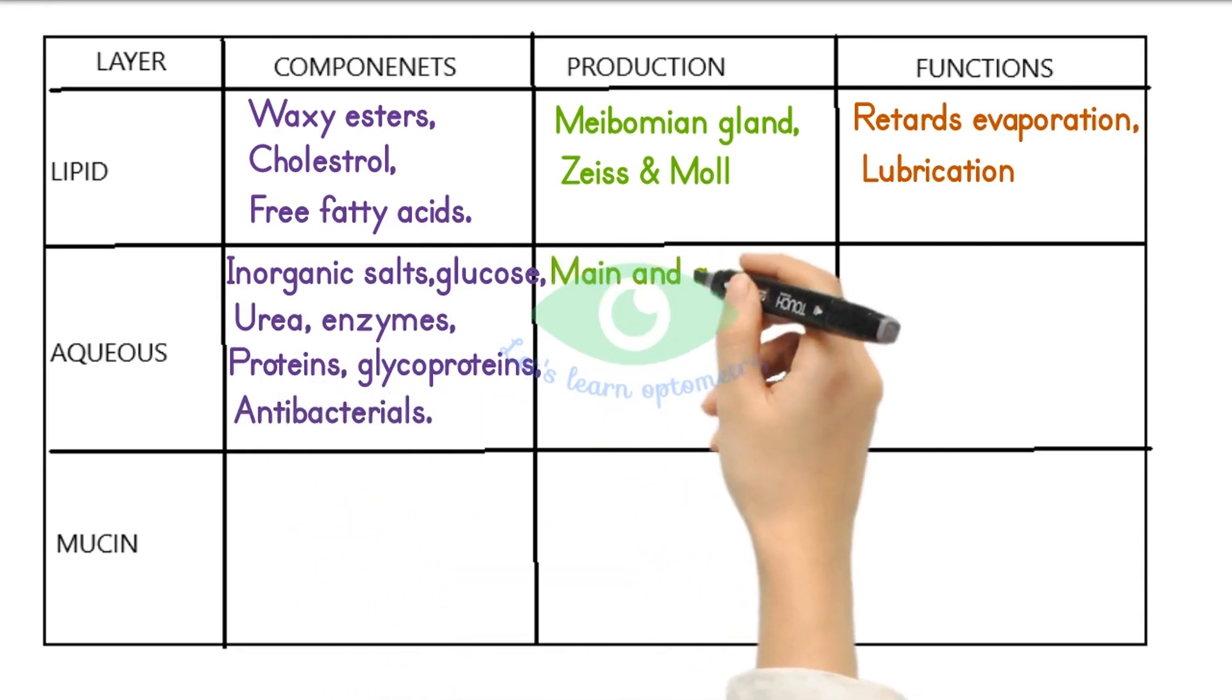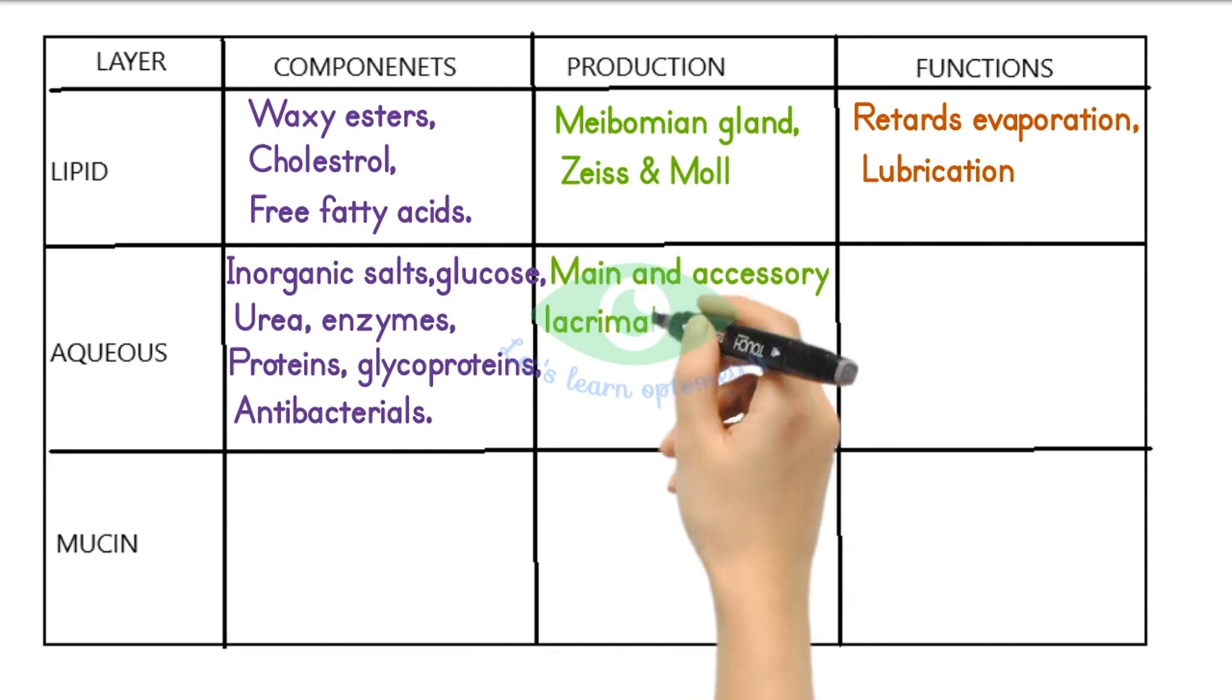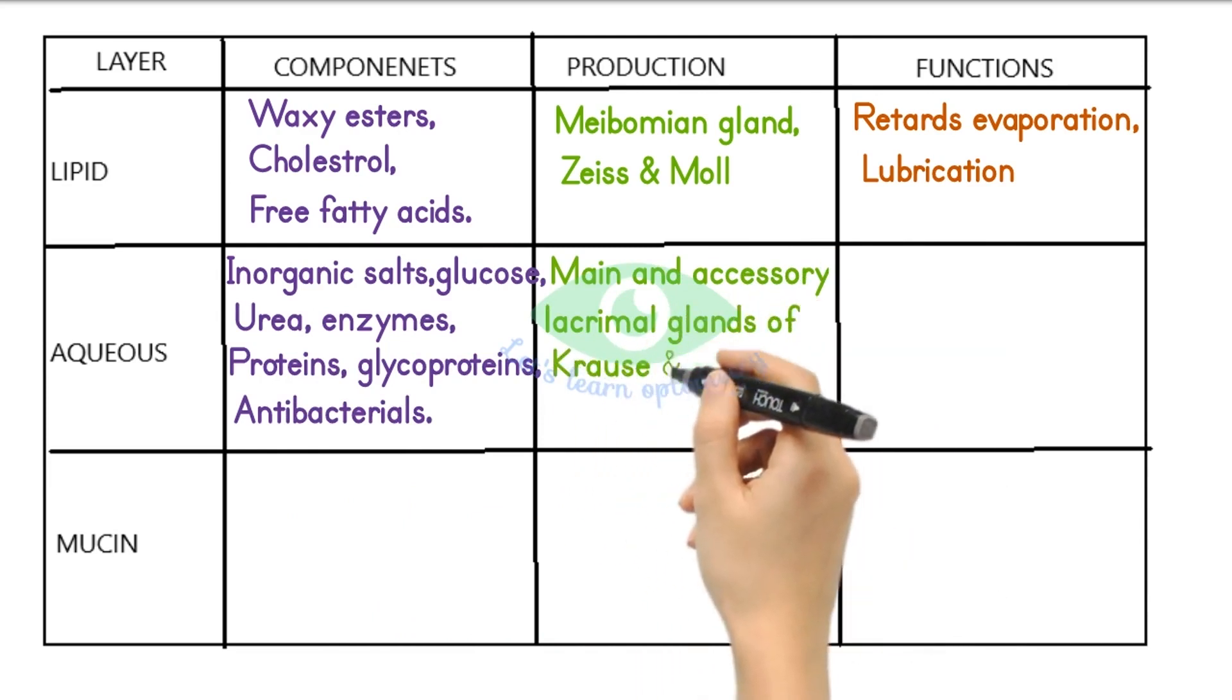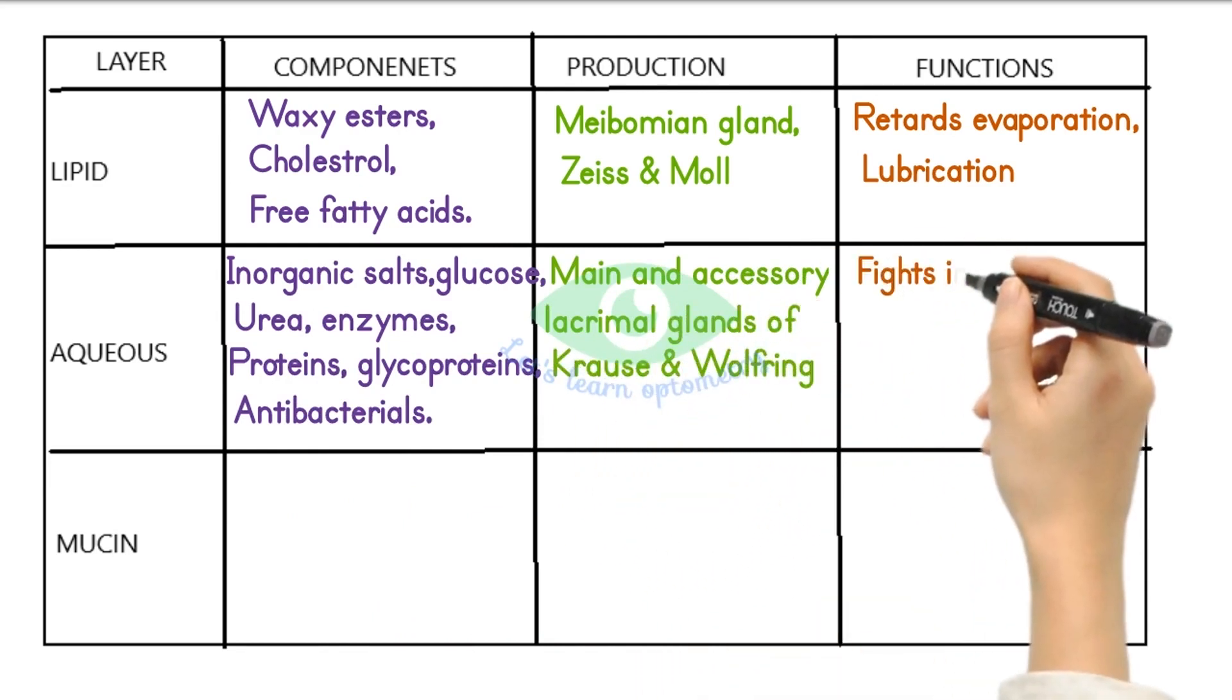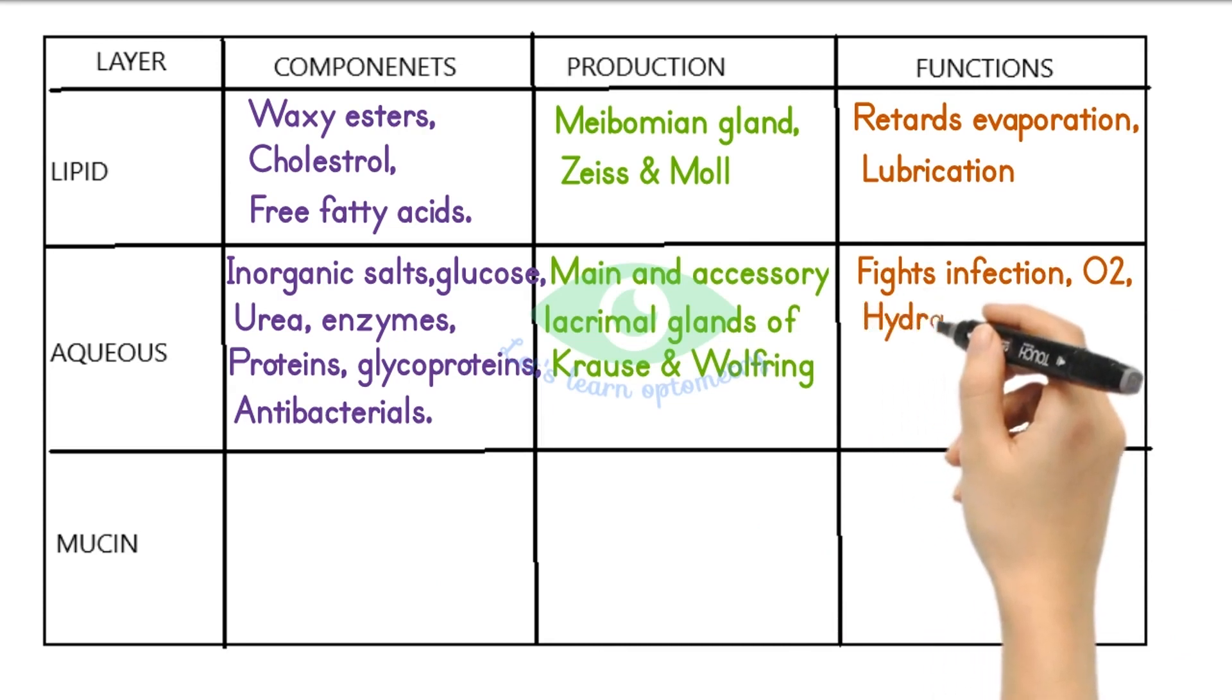It is secreted by the main and the accessory lacrimal glands of Krause and Wolfring. It helps to fight against infection, provides oxygen to the cornea, and helps in hydration and wound repair.